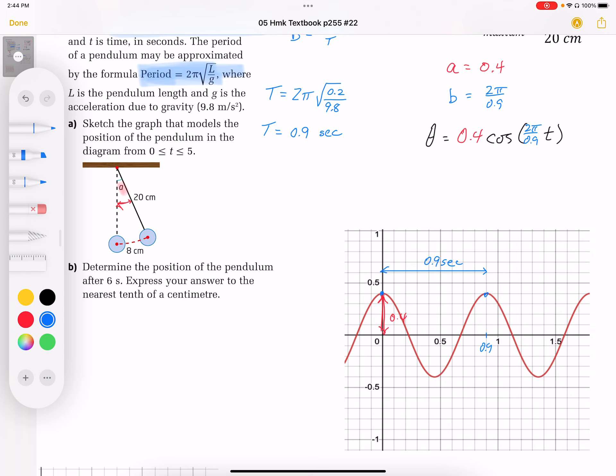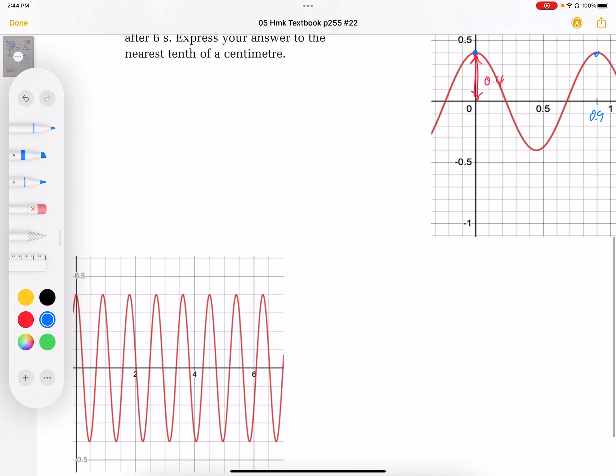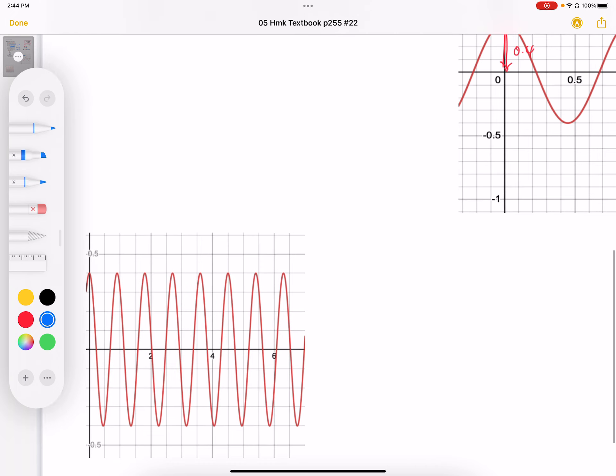Part B says then, determine the position of the pendulum after 6 seconds. Express the answer to the nearest tenth of the centimeter. Well, I've graphed this for 6 seconds here.